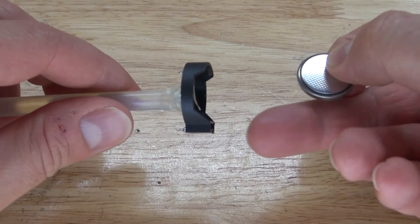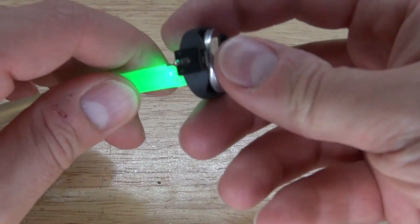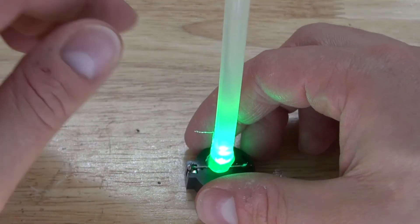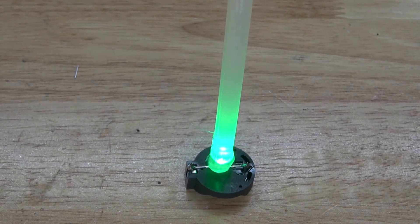And there you have it, your project is now done. Now, just simply take the button cell battery and place it inside of the button cell battery holder. And there, you have yourself an LED glow stick.